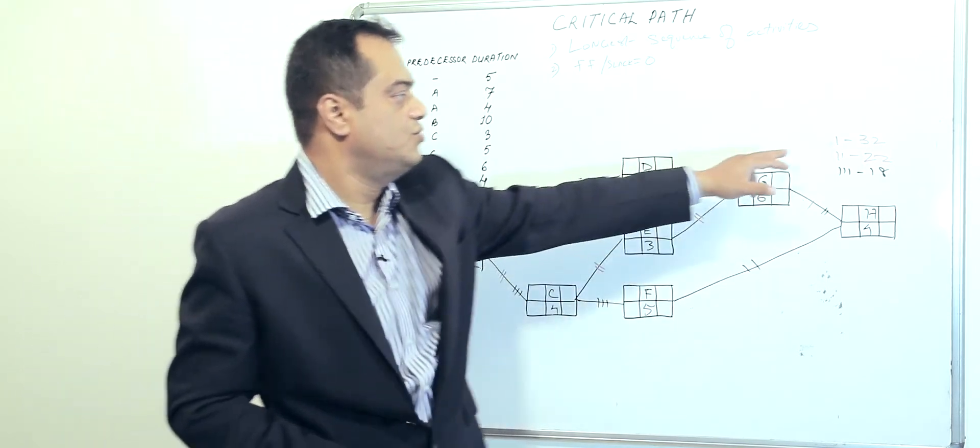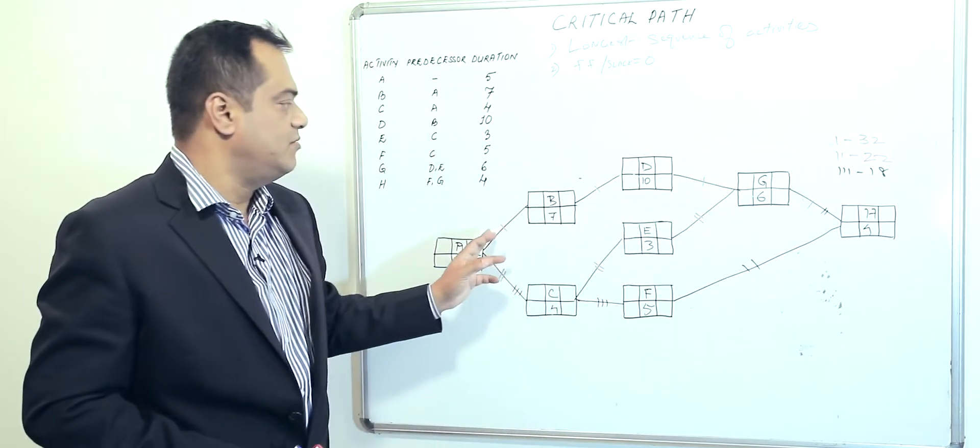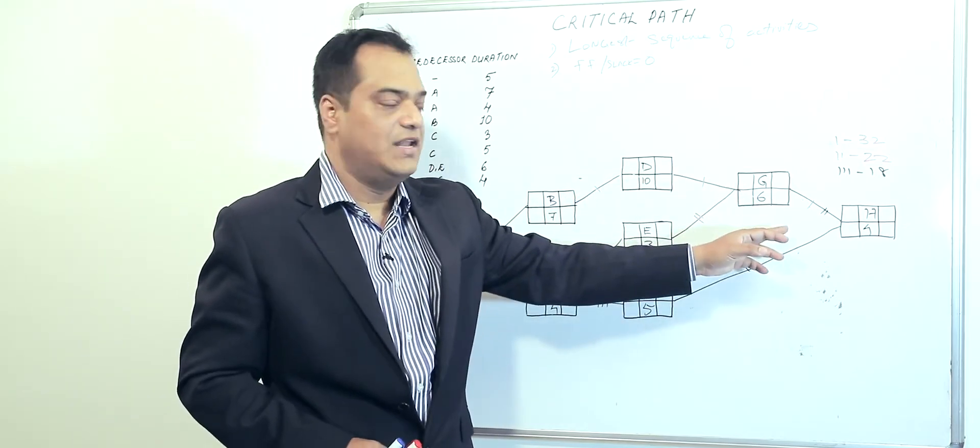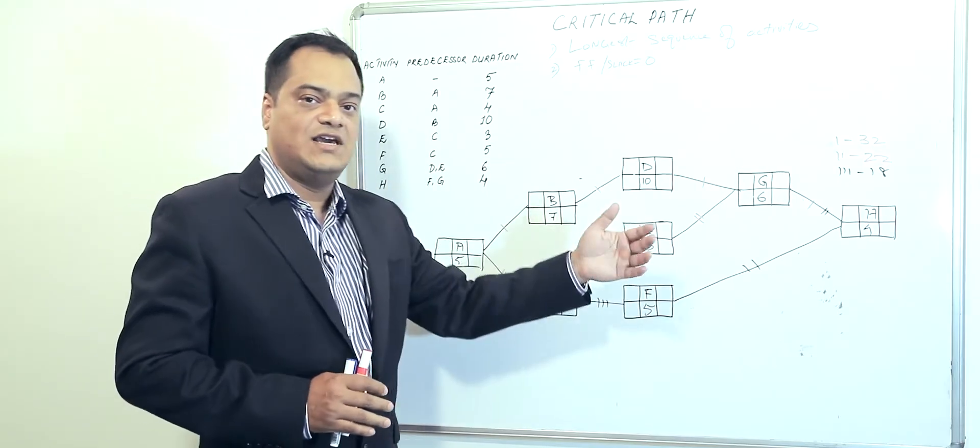That means with 32 being the longest, this represents our critical path. We will then do forward pass and backward pass in our next video.